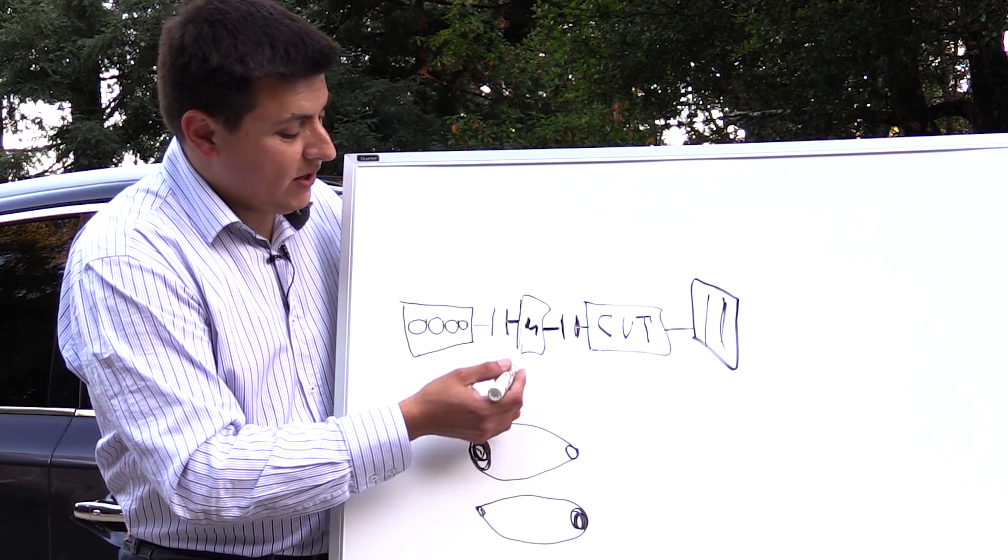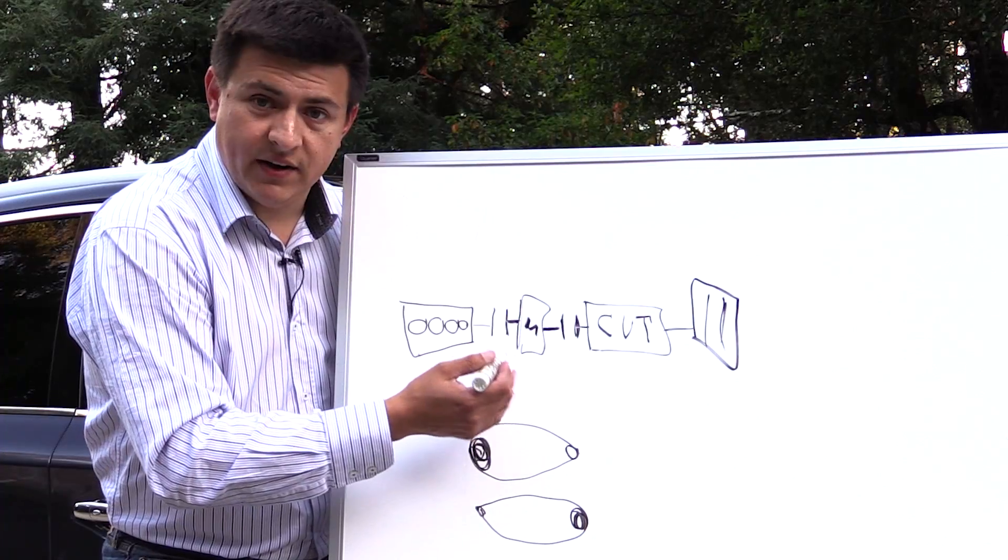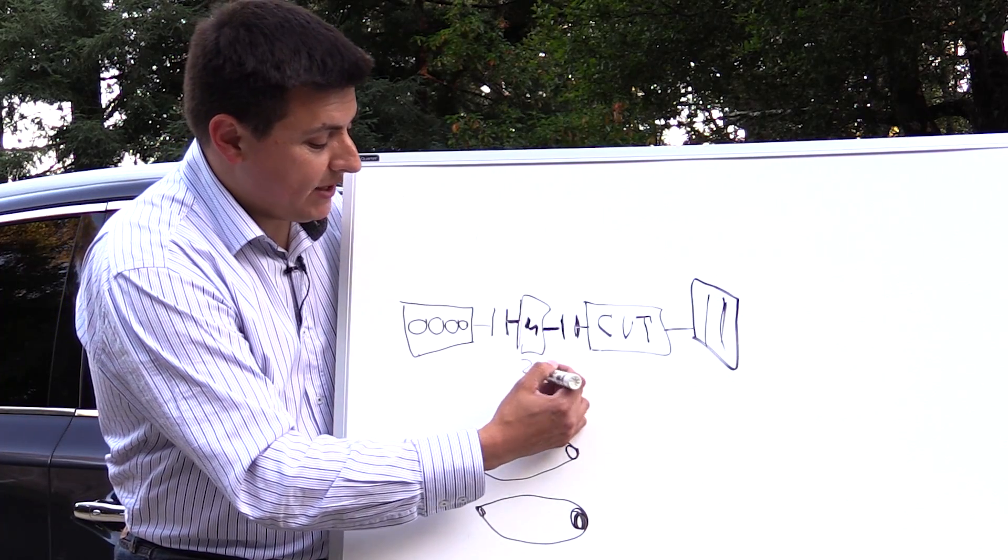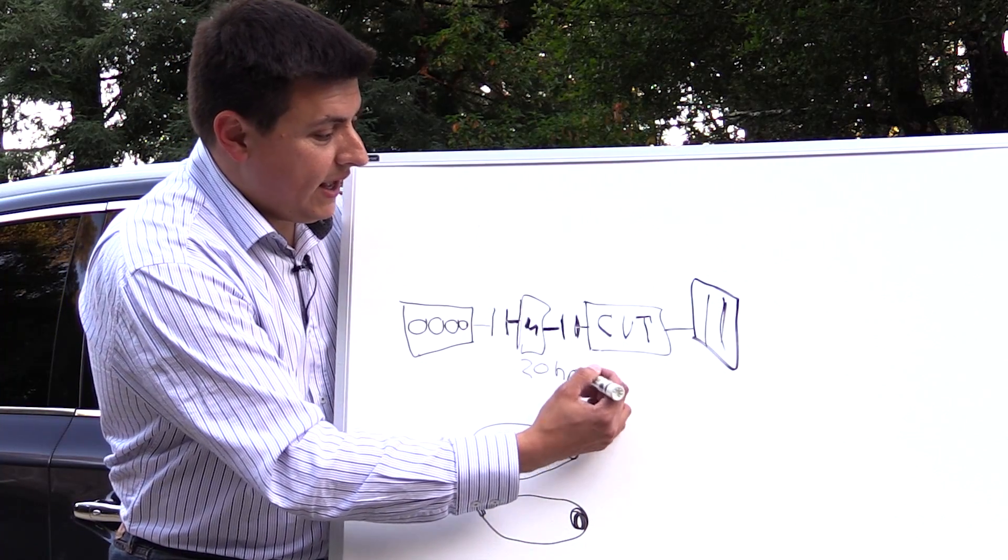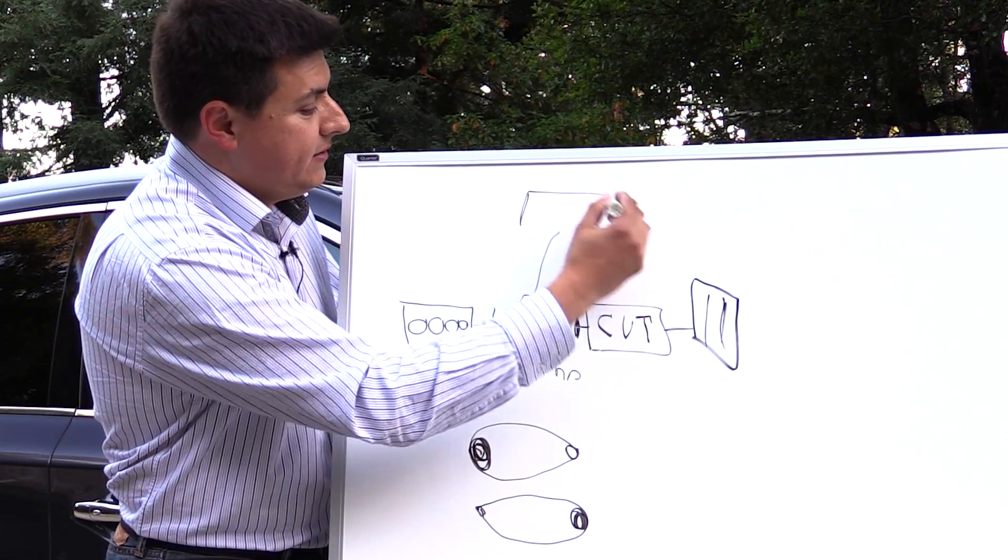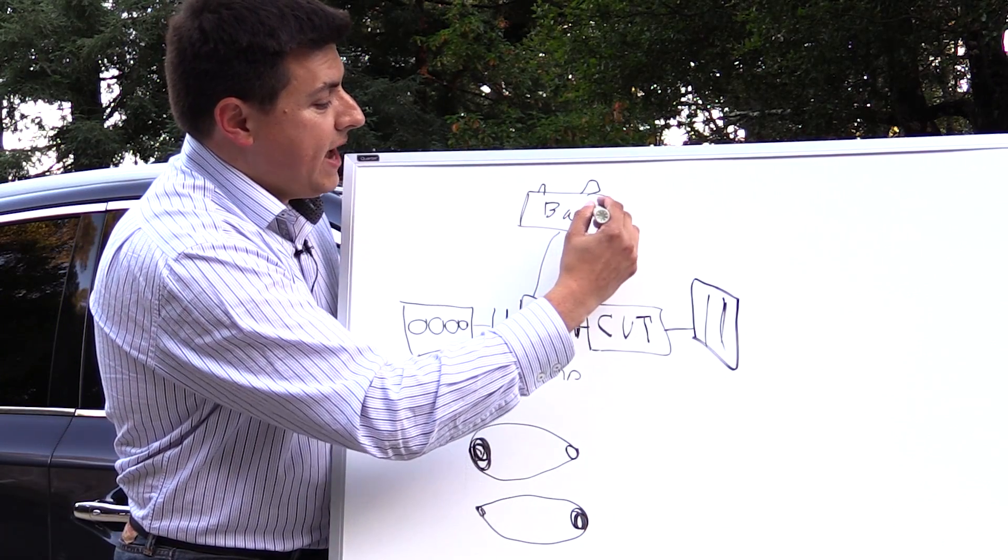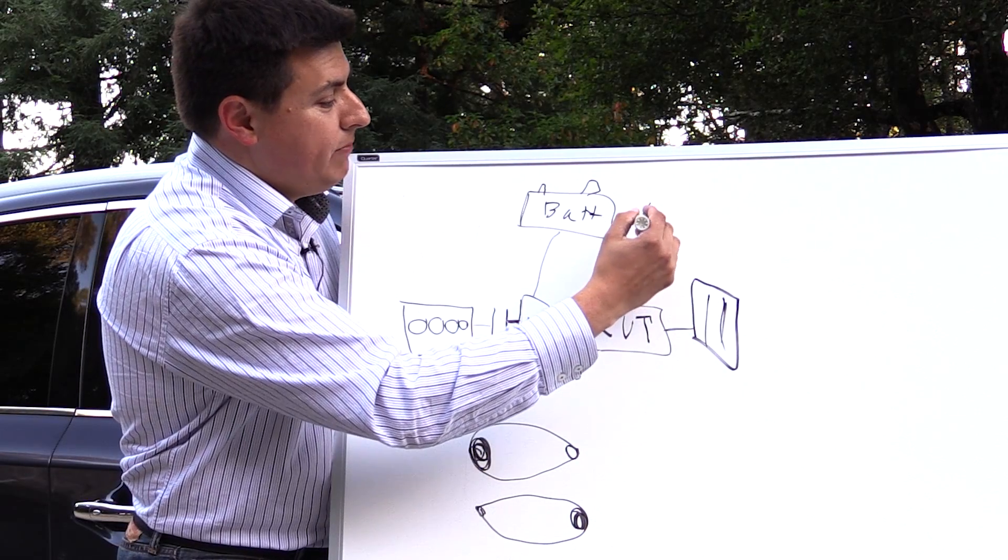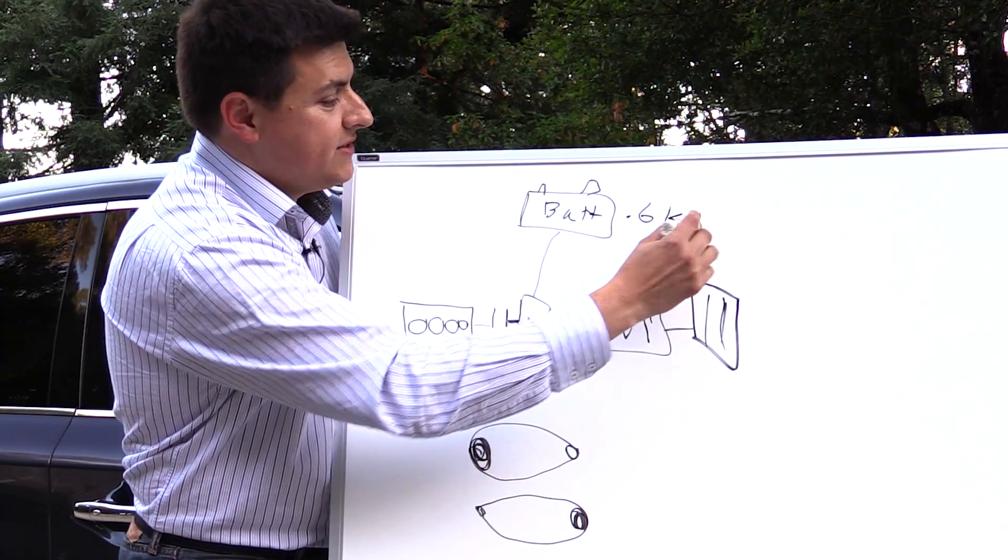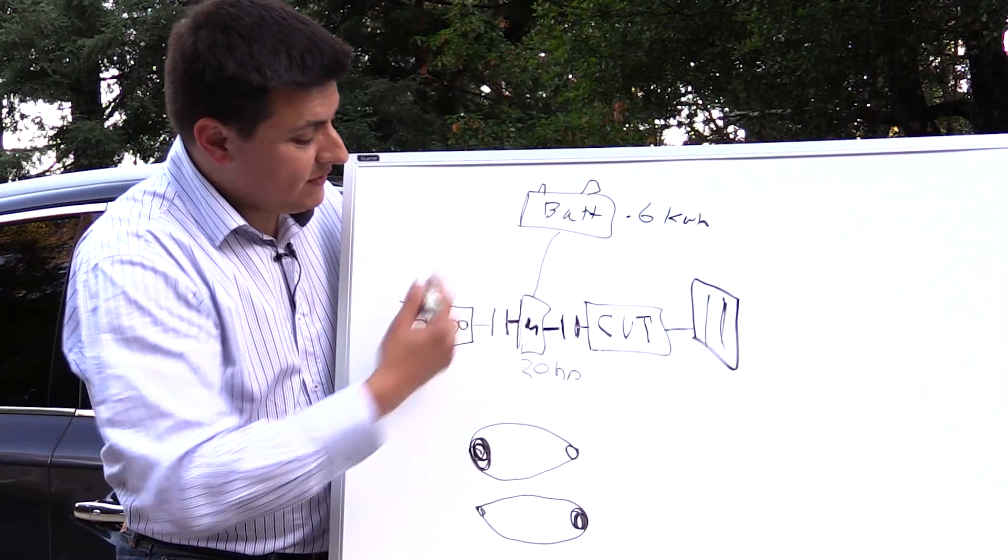Now in the other Infiniti hybrids we also have a much larger motor. In the Pathfinder and the QX60 this is about a 20 horsepower motor and this motor is connected to a battery pack. This battery pack has a capacity of about 0.6 kilowatt hours which is relatively small.